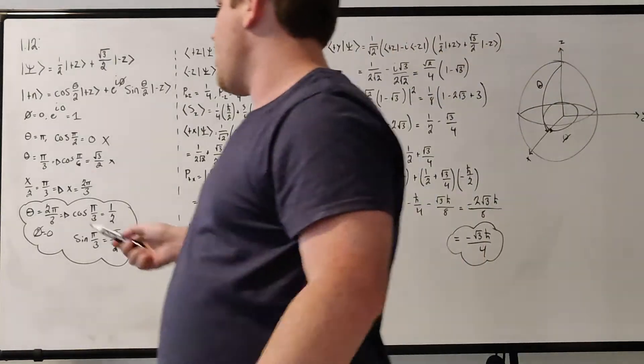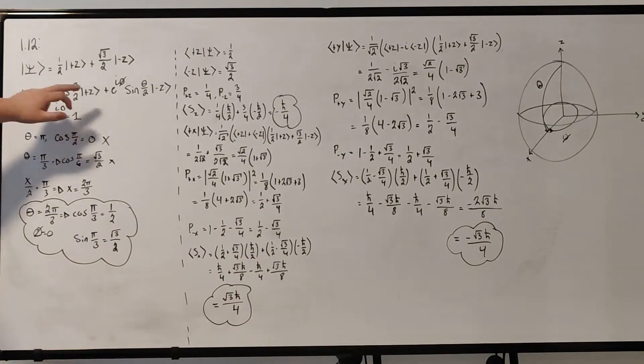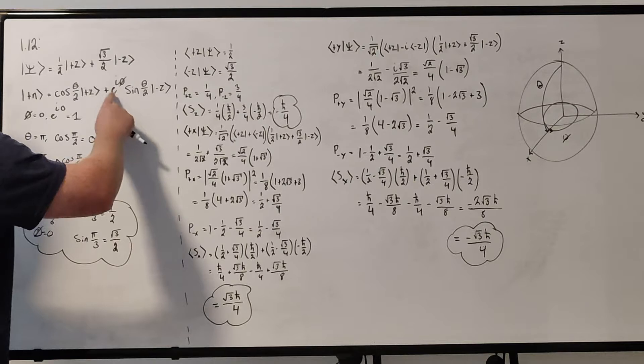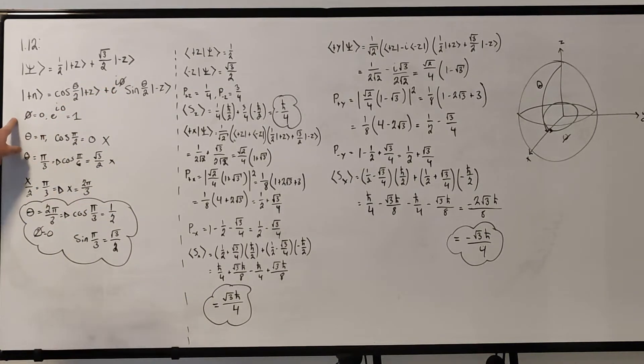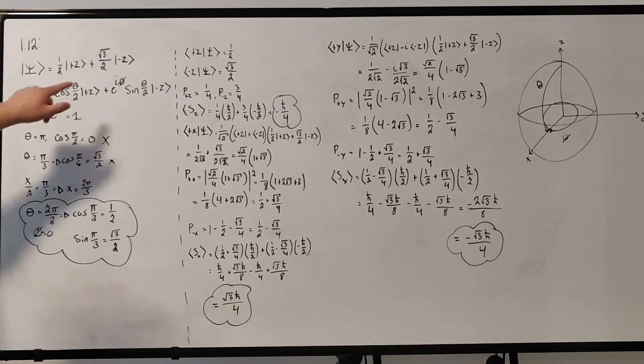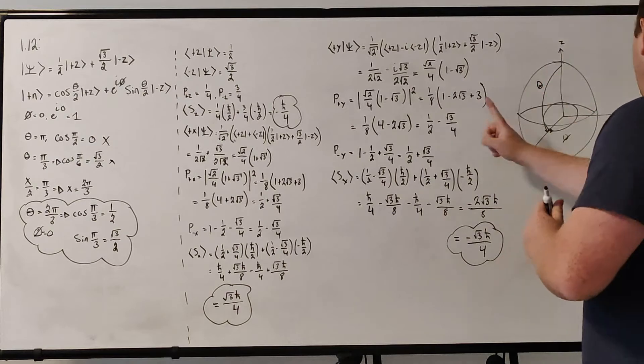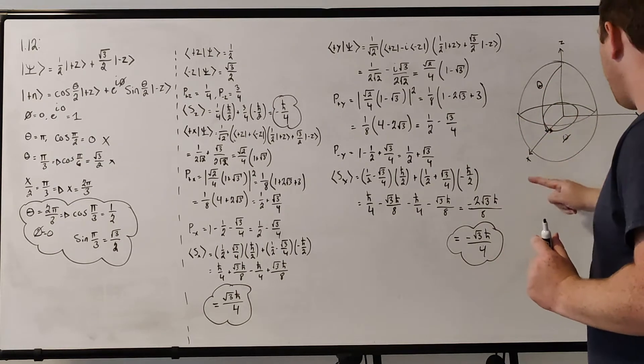We want to know what direction, what theta and phi does this state have, what direction is that aligned to along this Bloch sphere. If you compare our state here, we see that there's no complex term on the second term, and so the only way to get rid of this e to the i phi is to make phi equal to zero. Because e to the i zero, anything raised to the zero power, is just one. So already we can see that our phi here is going to be zero.